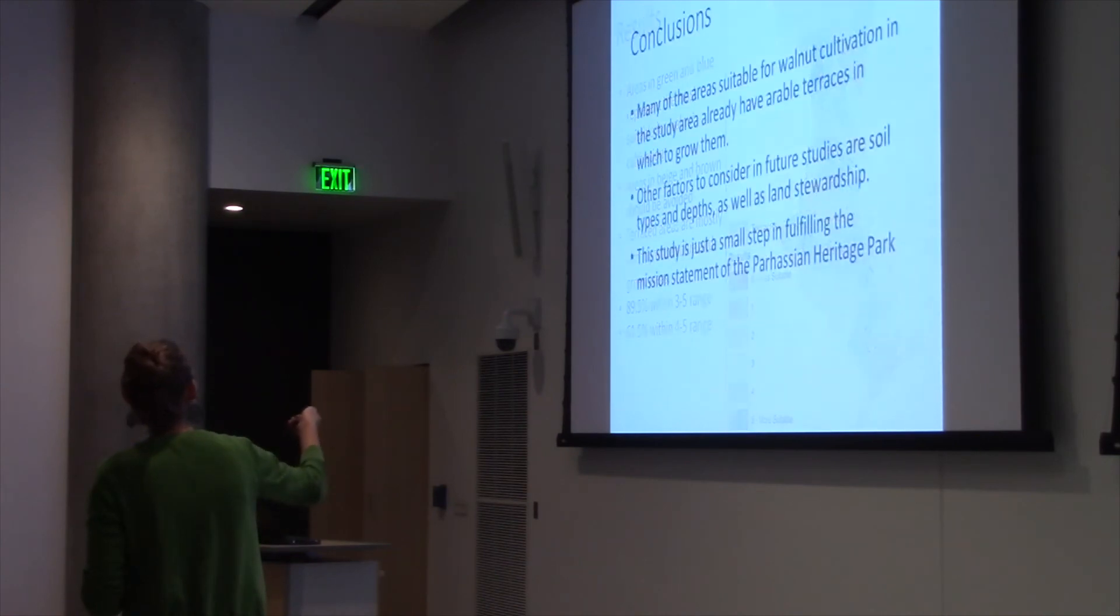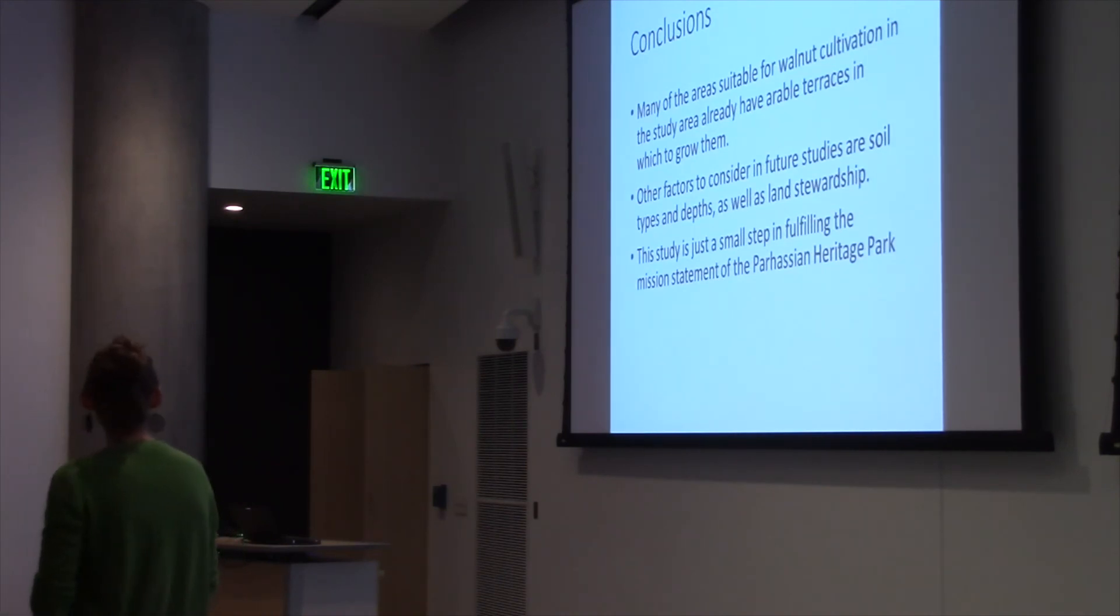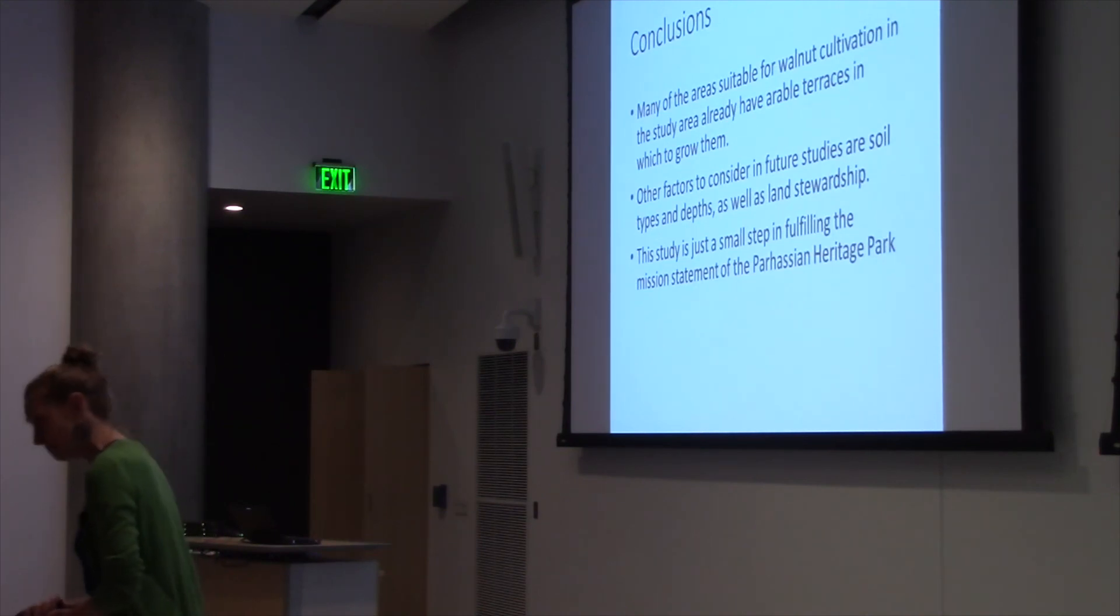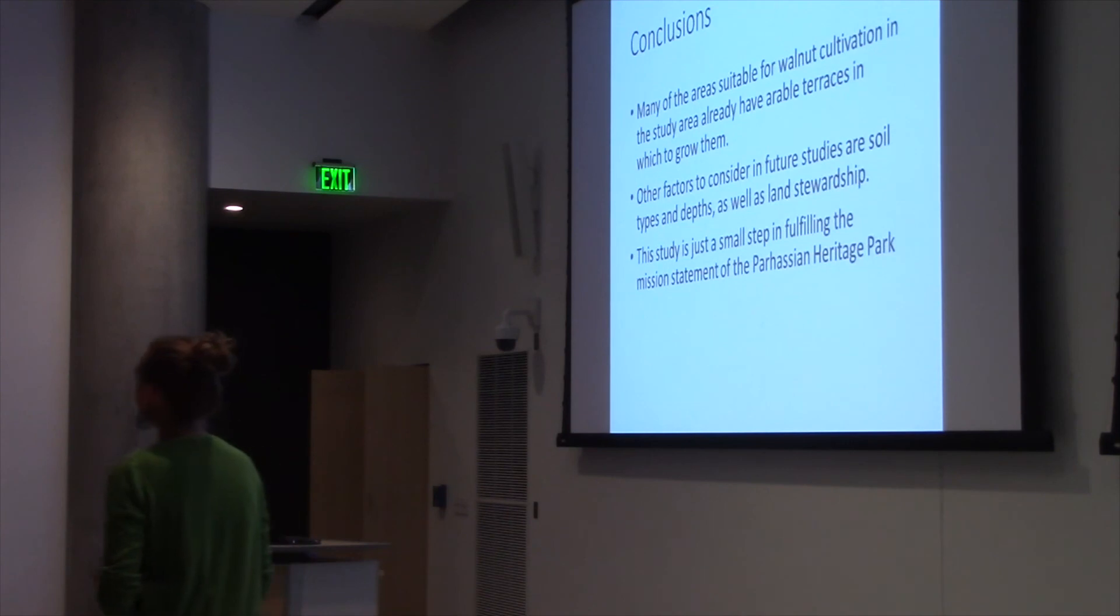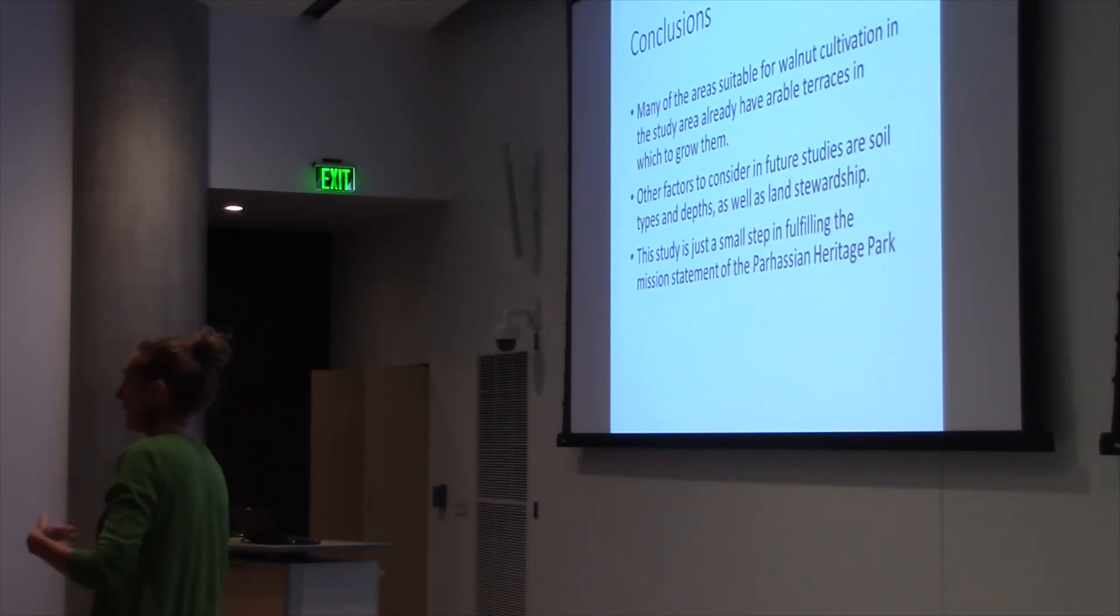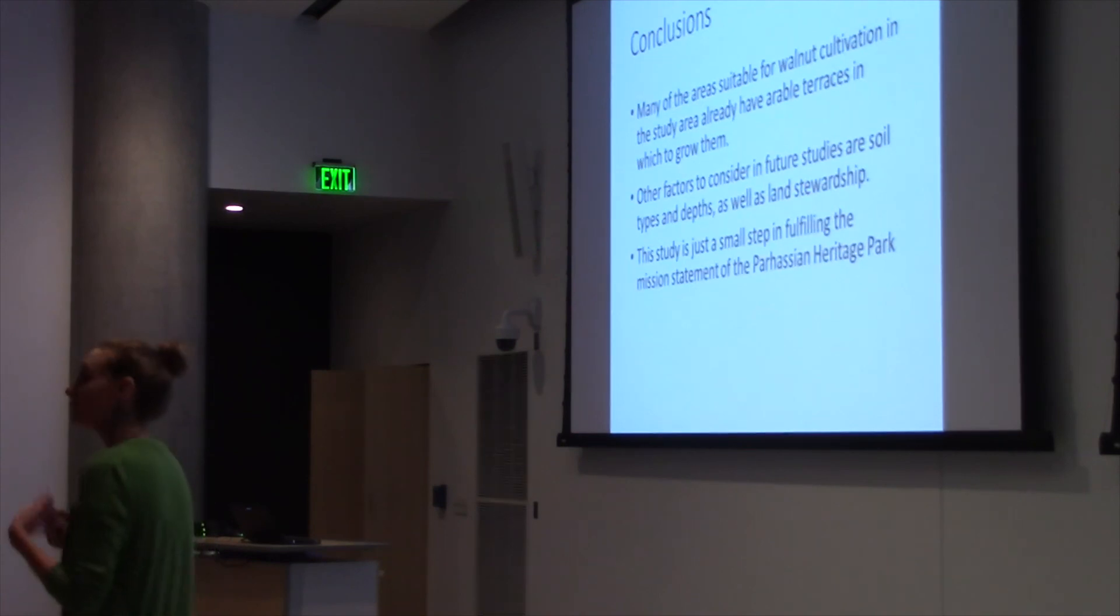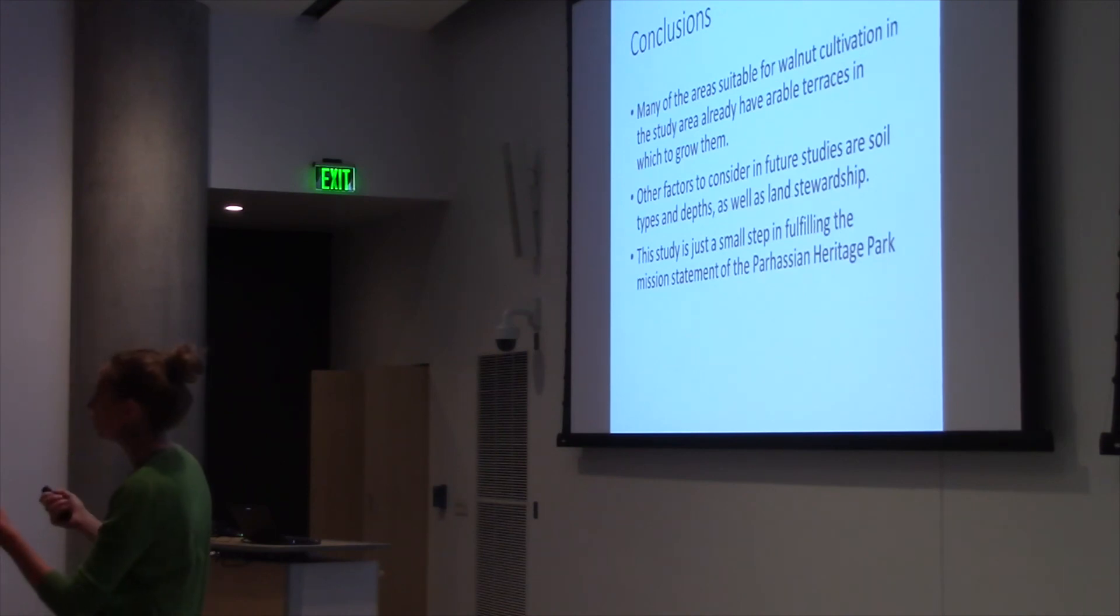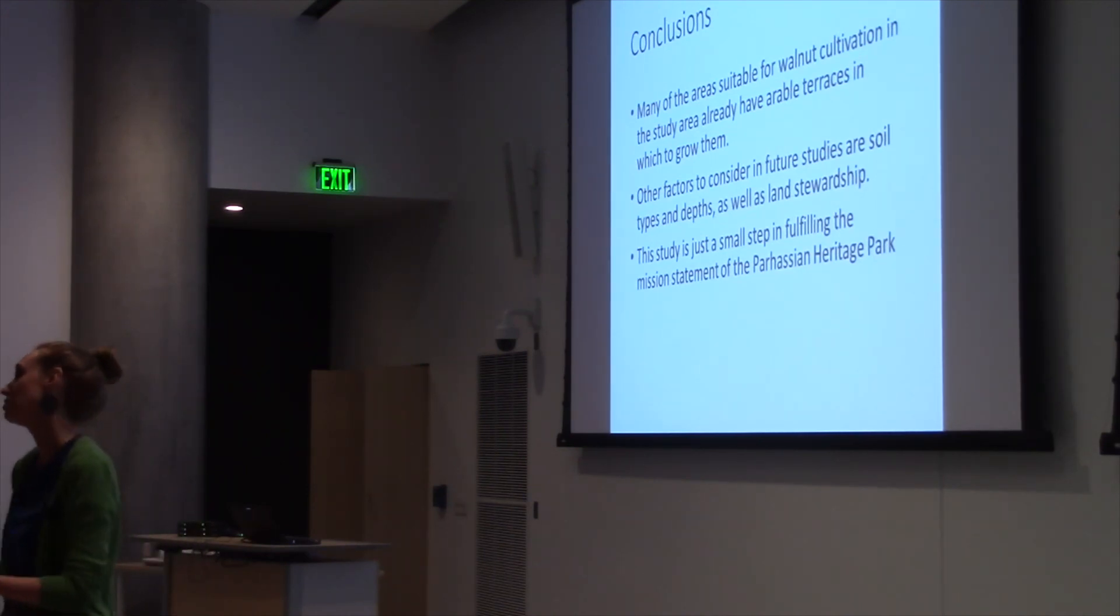And so to conclude, many of the areas suitable for walnut cultivation in the study area already have arable land in which to grow them, which is great. However, this is a really preliminary study. There are so many other factors that can be taken into account here. I would love to go back and look at soil types and depths, because for a plant that's a pretty big deal. And I would also like to see what land stewardship has to do. Like I said, this is not a usual park in that the government just buys the land and then it has stewardship over it. People still own this land and they use it in different ways. And so that would be another sort of layer to add for future study. And finally, this study is a very small step in fulfilling the mission statement for the Parasian Heritage Park. Clearly a value-added product of like walnut liqueur and candies is a long way off, but hopefully this is at least a small start that we can make.